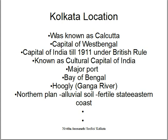Kolkata is known as the cultural capital of India — so many intellectuals were born there. The first Nobel laureate of India, Rabindranath Tagore, for literature, was from Calcutta. He set up Shantiniketan near Calcutta. Calcutta is also a major port; the port is on River Hooghly, which is in the Bay of Bengal. The Ganga is called Hooghly in Calcutta and Padma in Bangladesh.